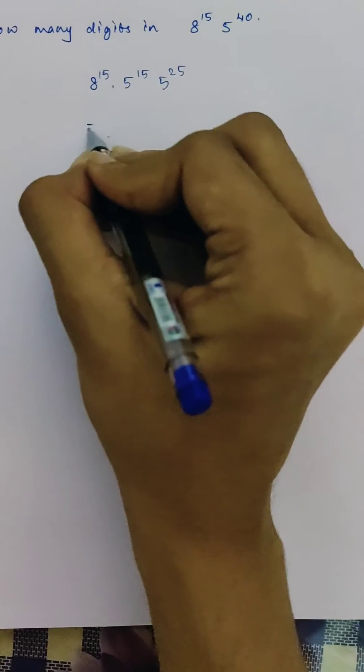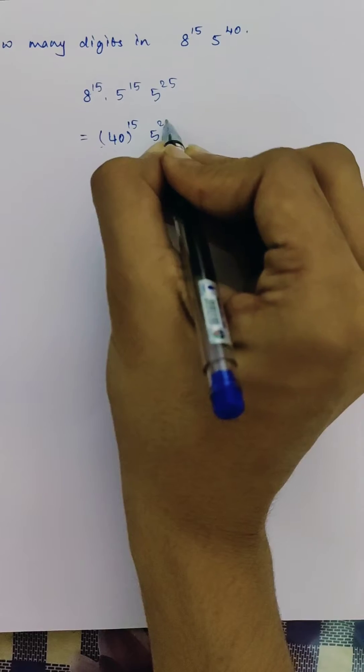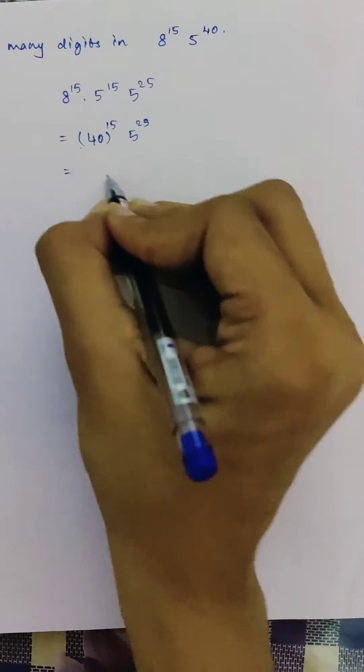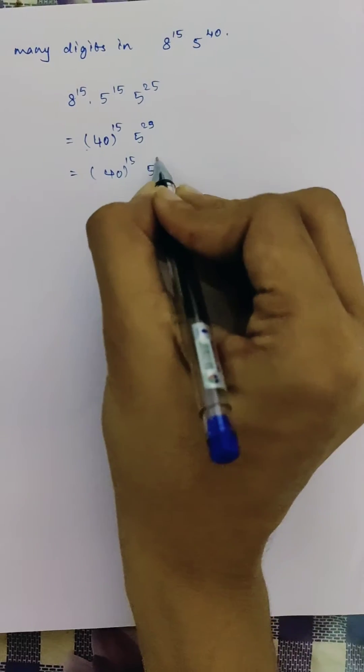Now we can write it as 40 power 15 into 5 power 25. Now in the next step we can split 5 power 25 as 5 power 15 and 5 power 10.